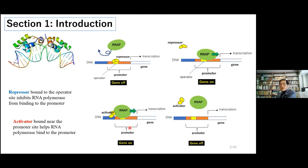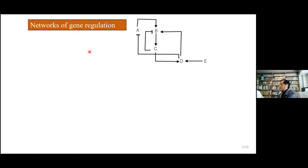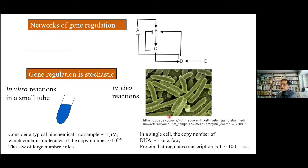All these regulatory proteins — repressors or activators — are important factors to regulate gene activity, and they are also the products of genes themselves. So we can think about communication among multiple genes like this. An important thing is that such regulatory networks are very stochastic and noisy.